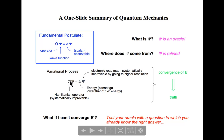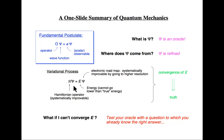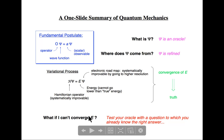The variational principle says when we apply the Hamiltonian operator to any wave function, we will never get an energy out that is lower than the correct energy associated with the exact wave function. Our goal is to rationally improve the wave function, using energy as the judge—if the energy goes down, we must be approaching truth. Convergence of energy leads to truth. In the semi-empirical regime, where we're not converging E, we evaluate whether we stopped at a reasonable point by doing calculations and validating against known experimental data.